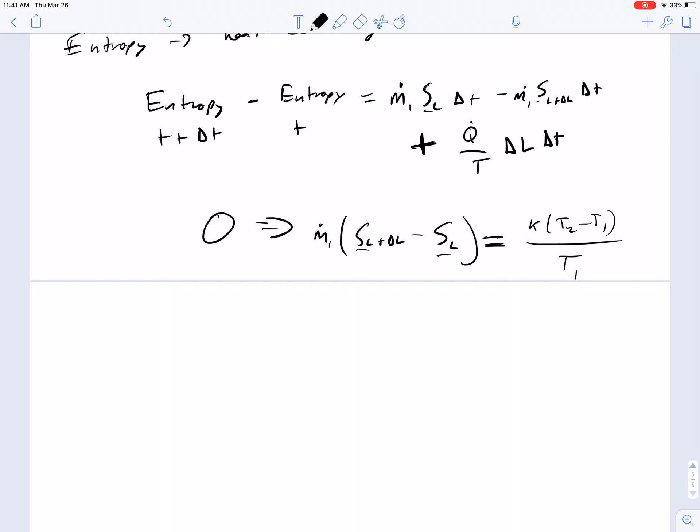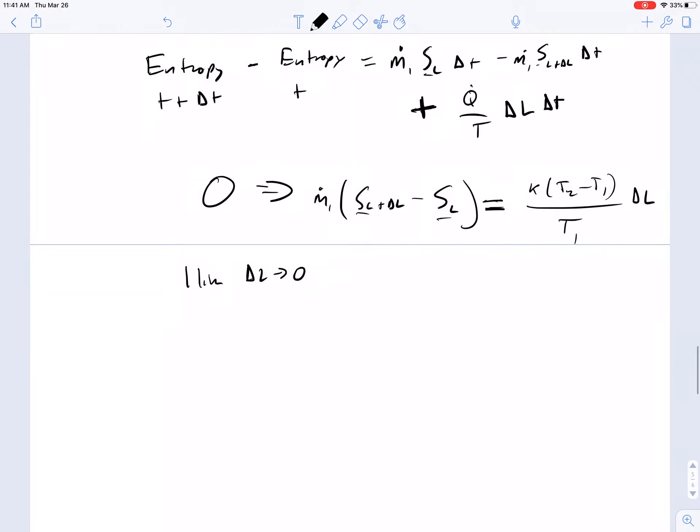This becomes times delta L. Take the limit of delta L goes to 0. We're going to end up with mass flow rate dS dL equals this K times T2 minus T1, all divided by T1.